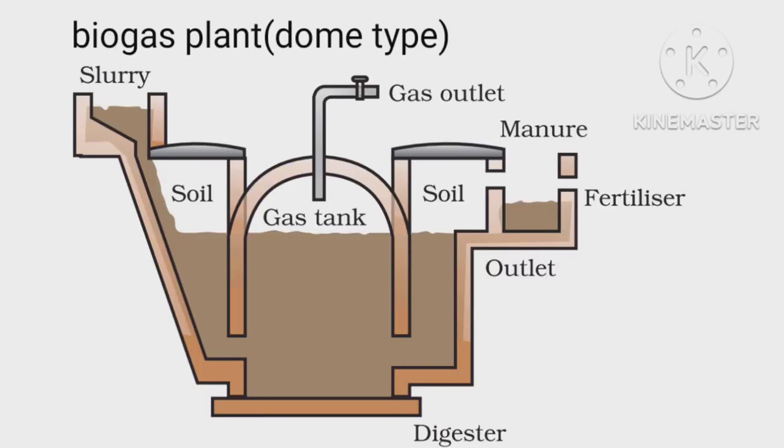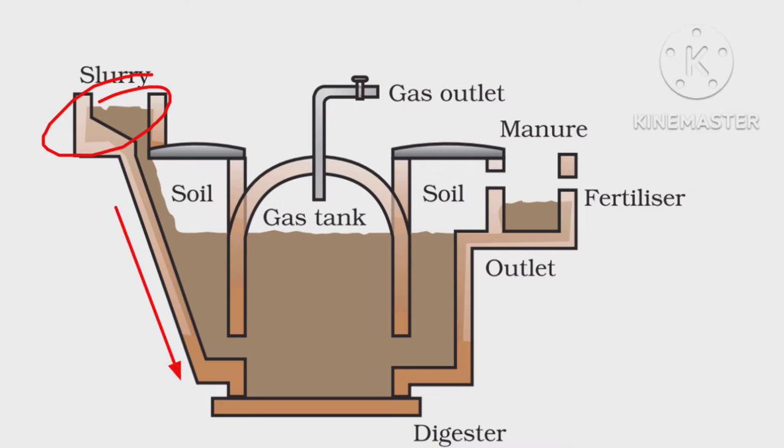The plant has a dome-like structure built with bricks. A slurry of cow dung and water is made in the mixing tank, from where it is fed into the digester. The digester is a sealed chamber in which there is no oxygen.